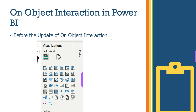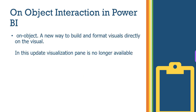Before the update of on-object interaction, this is the visualization section — only the visualization section, which was the ribbon tab. On-object interaction is a new way to build and format visuals directly on the visual.